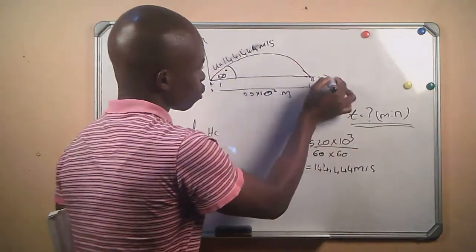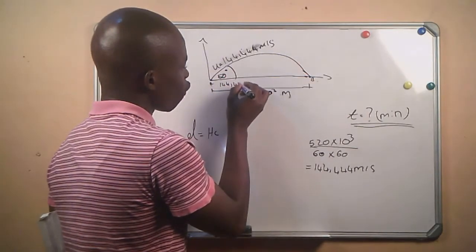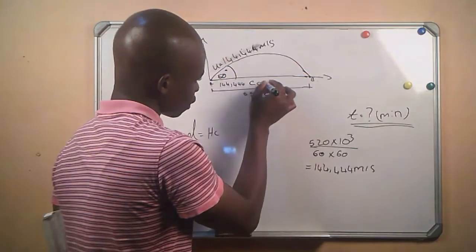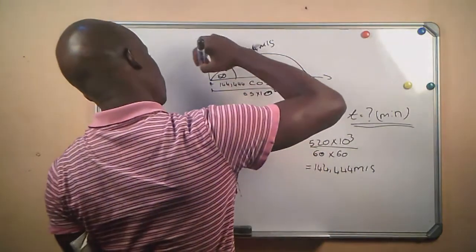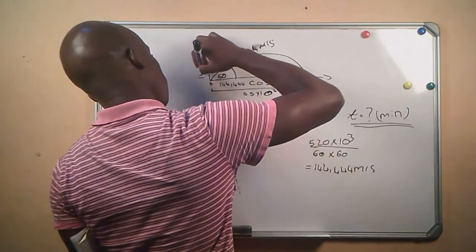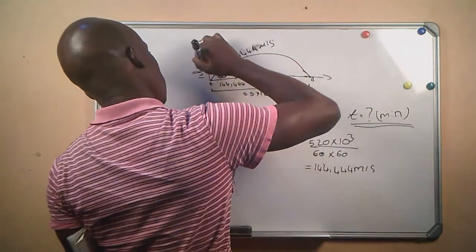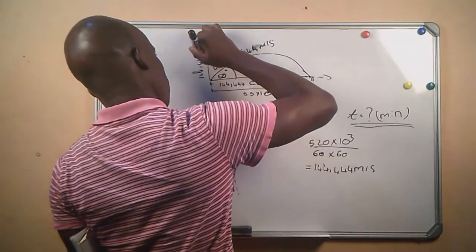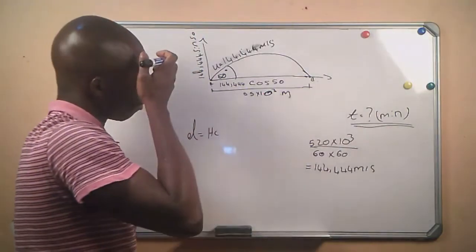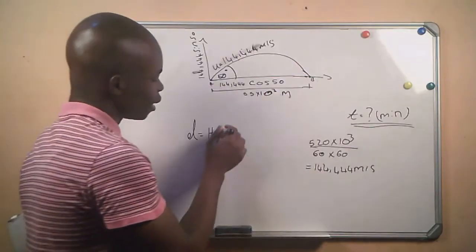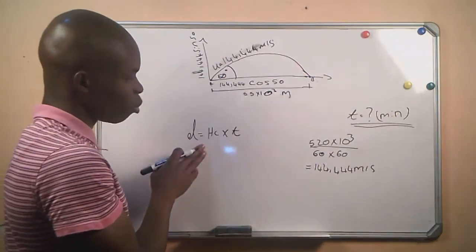The horizontal component is 144.444 × cos 50°, and the vertical component is 144.444 × sin 50°. Since displacement equals the horizontal component times time, and we know the displacement and the horizontal component, we can directly make t the subject of the formula.